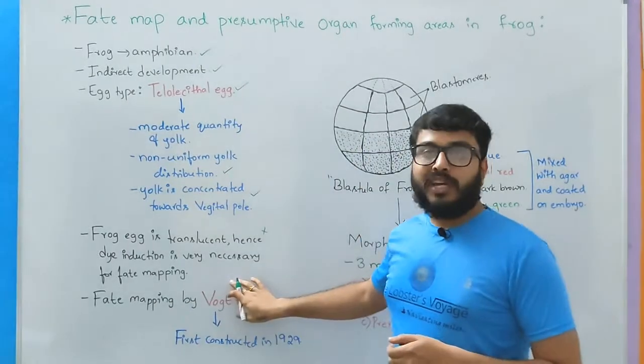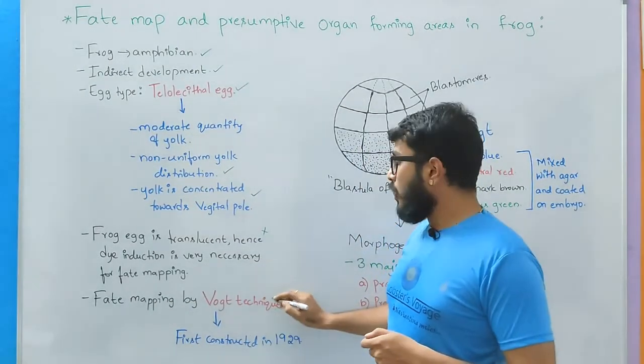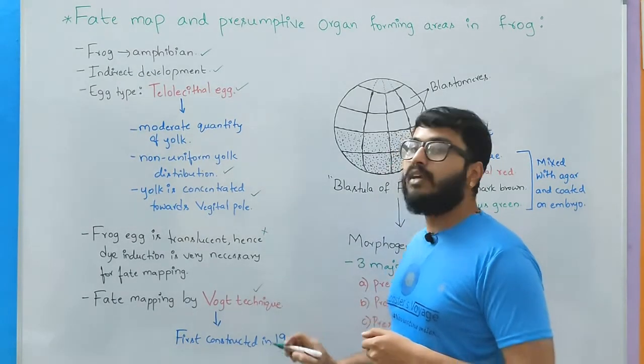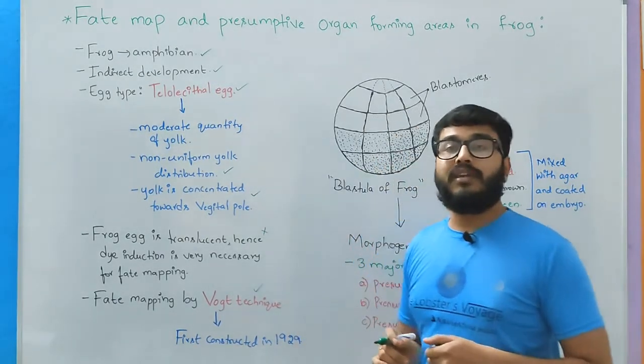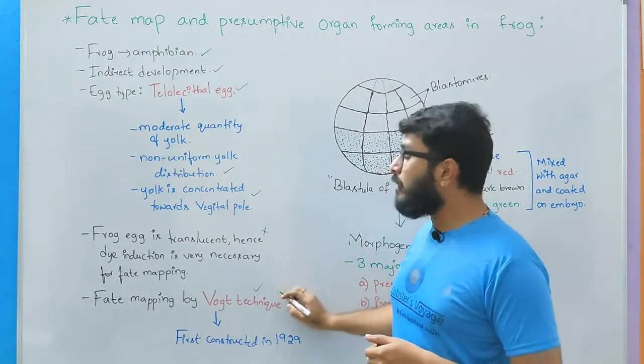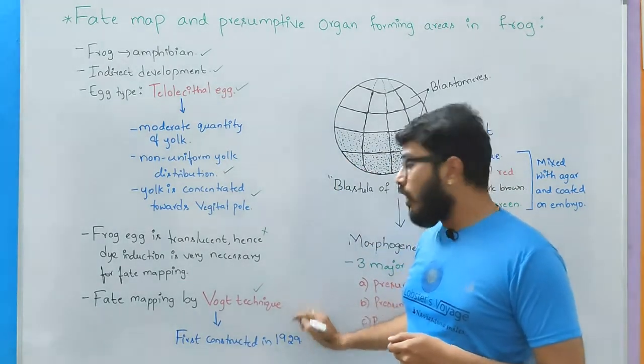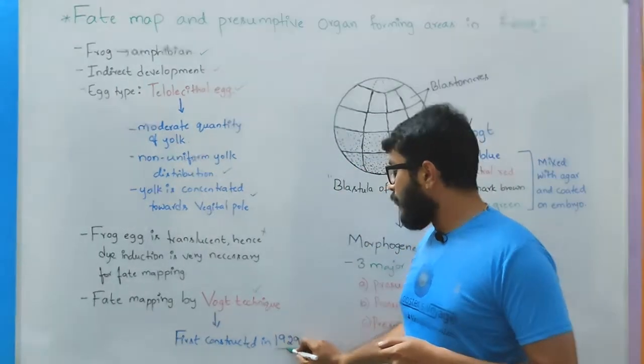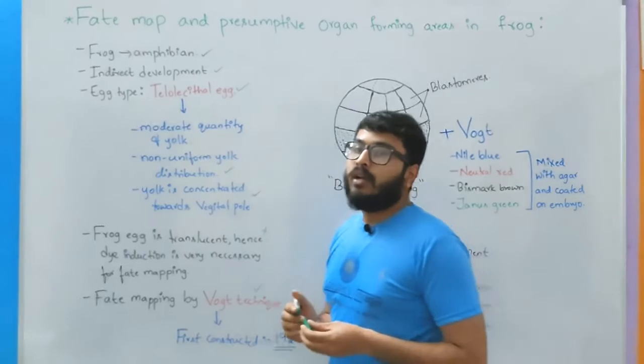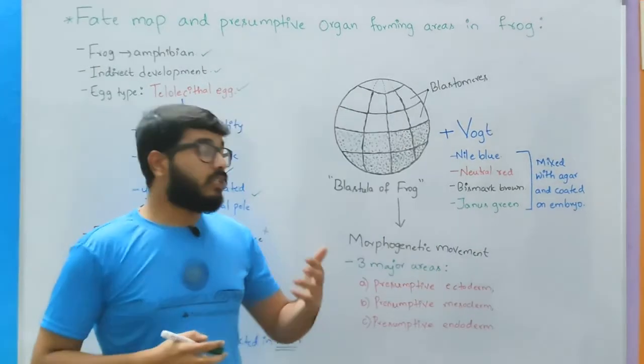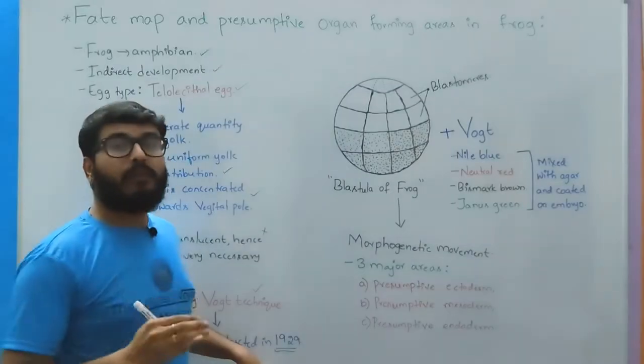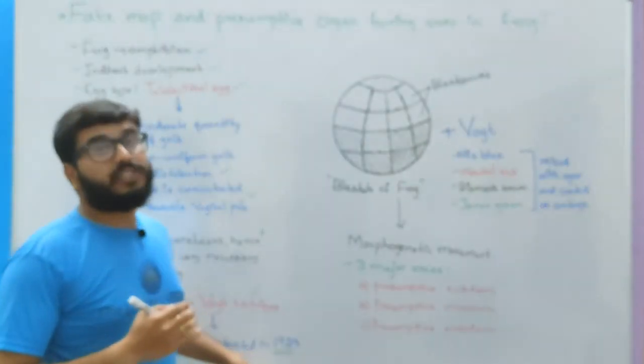The fate map construction in case of frog embryo involves the artificial technique called as Vogt, which was developed in the year 1925, and for the first time the fate map construction of the frog happened in the year 1929. So approximately 80-90 years ago, for the first time fate map of the frog was constructed.